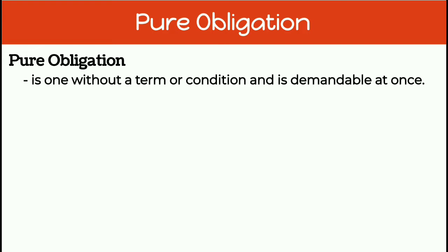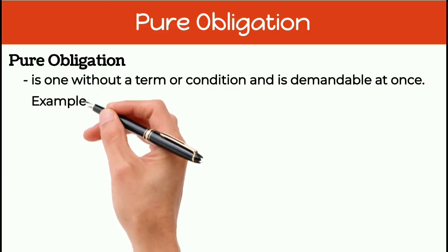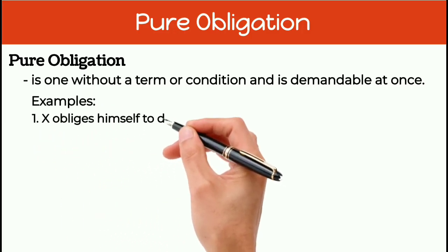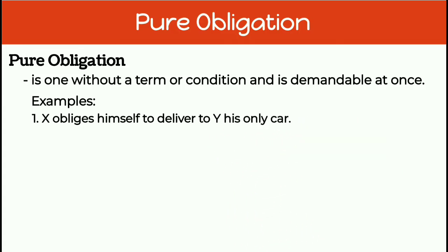The creditor can demand fulfillment of the obligation from the debtor. For example, X obliges himself to deliver to Y his only car. This is a pure obligation because there is no period or condition attached to the obligation, and since there is no period or condition, the obligation is immediately demandable. Y can now demand from X to deliver the car.